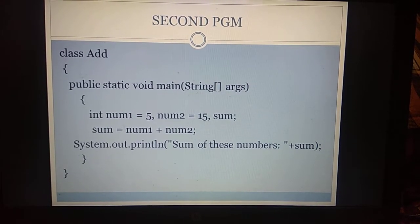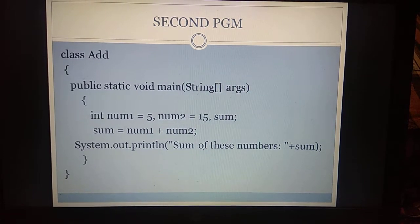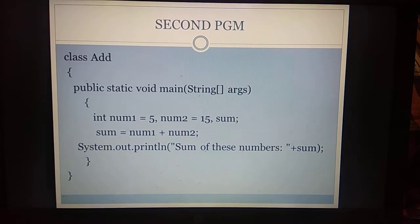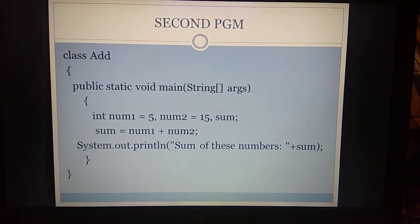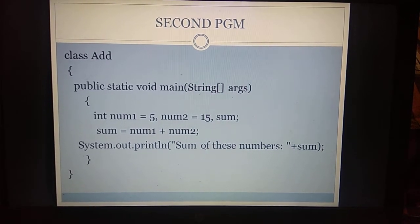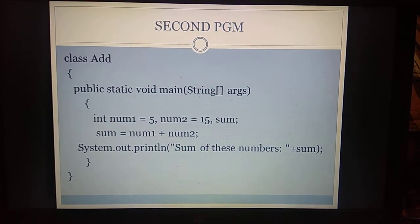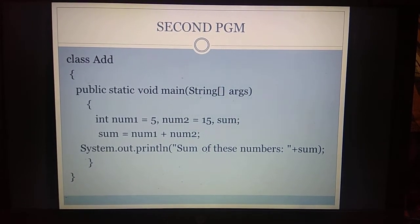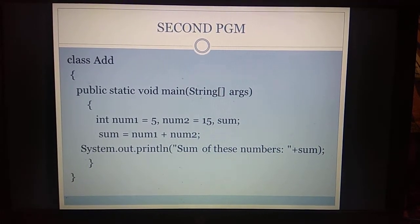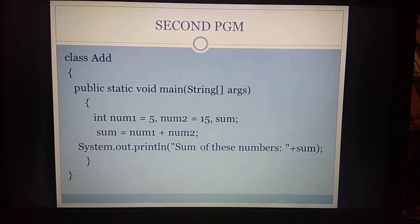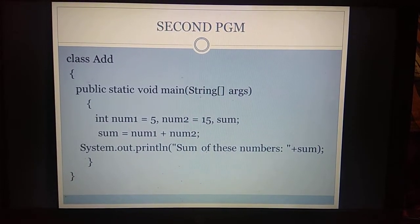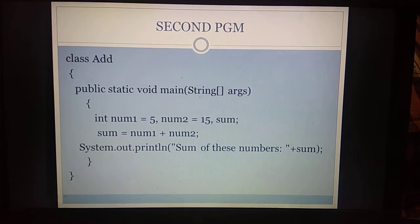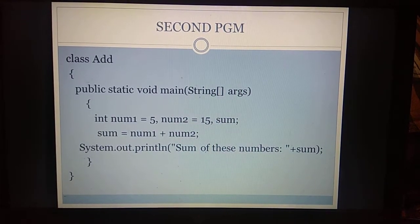Inside the main function we are having integer variables. We are declaring integer variables. Two integer variables we are assigning values and one more we are keeping as a resultant variable. int num1, num2 and sum we are having. num1 is 5, num2 is 15 and sum is the resultant variable. Further, we are having the formula: sum is equal to num1 plus num2.